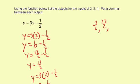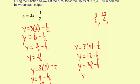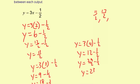Okay, one more to go. For the input of 4, y equals 3 times 4, and then minus 1 half. So y equals 12 minus 1 half. Common denominator: y equals 24 over 2 minus 1 half. So y equals 23 halves.